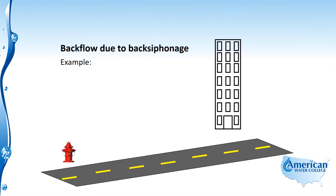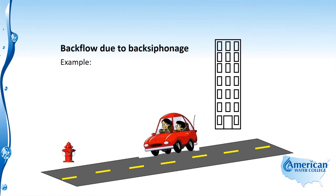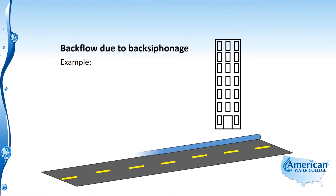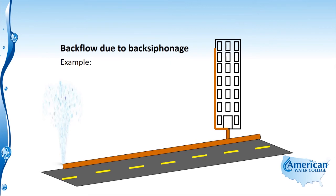Now we're going to take a look at backflow due to back siphonage. Here we have a young couple driving down the street — they take out a fire hydrant and cause a geyser in the street. This sudden flow of water out causes a drop in pressure in the system, which would cause a back siphonage condition from a high-rise building. It could be a janitor's closet with a hose stuck down into the sink, or some type of laundry system connected to the potable water system. With that pressure drop in the main water system, that would cause a siphon, or back siphonage, into the water system.